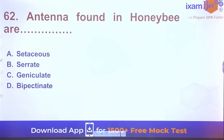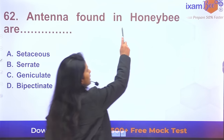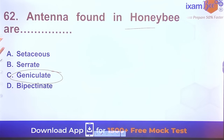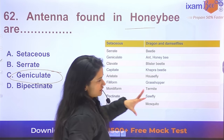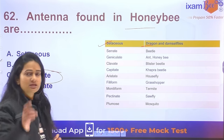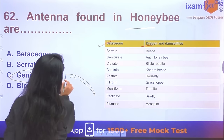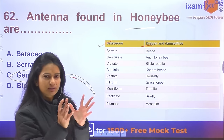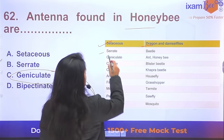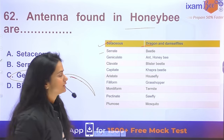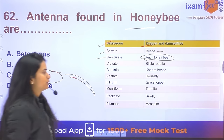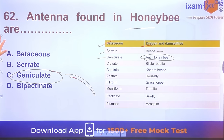Question 62: What type of antenna is found in honeybees? The antenna in honeybees is of the geniculate type. Different insects have different antenna types — for example, setaceous antennae are found in dragonflies and damselflies.